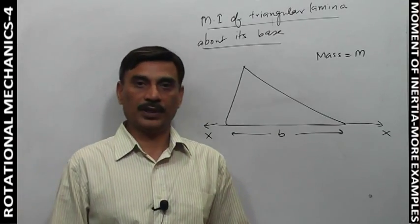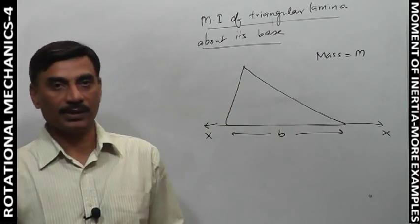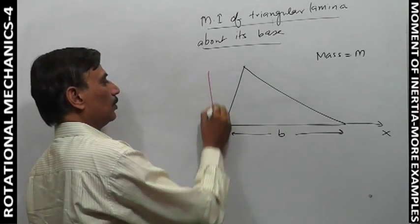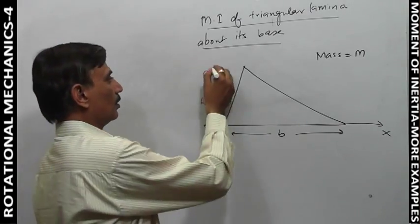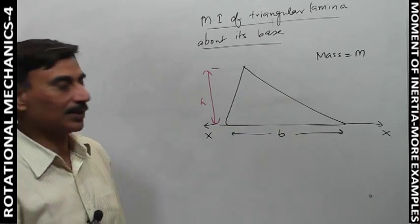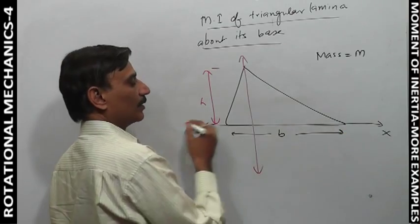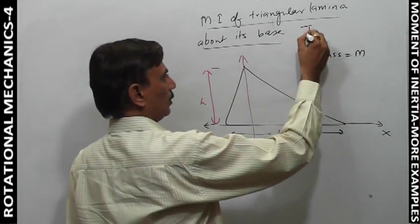Now we are going to find moment of inertia of a triangular lamina about its base. Let's take a dash table accessible, a moment of inertia to find out, that is I_xx dash.